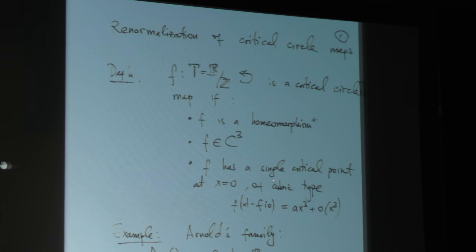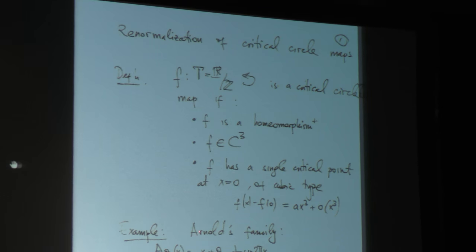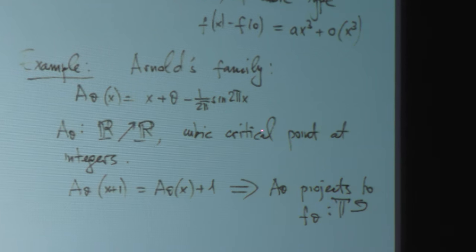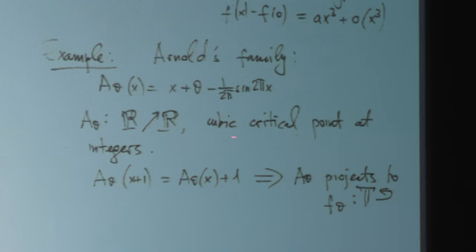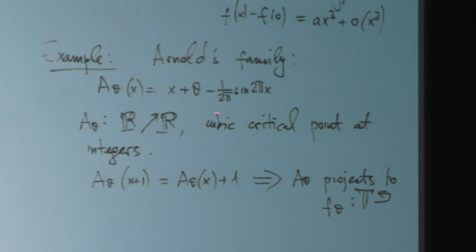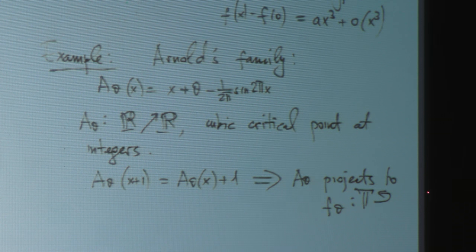There is everyone's favorite example, obtained from the Arnold family. This is a one-parameter family: x plus theta minus 1 over 2π times sine(2πx). These maps are homeomorphisms of the real line, analytic, and they have cubic critical points at the integers. They commute with unit translation and therefore each one projects to a well-defined map of the circle, which is by definition a critical circle map.